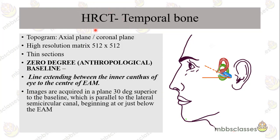Nowadays the CT scan is called high resolution because the sections are very thin, varying from 0.6 to 0.7 mm, with a resolution of 512 by 512. Images are usually taken in the axial plane, but reformations can be done in different sections. When imaging is done, it is always done in relation to the zero degree or anthropological baseline — a line extending from the inner canthus of the eye to the center of the external auditory meatus.